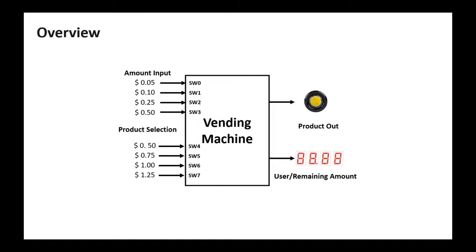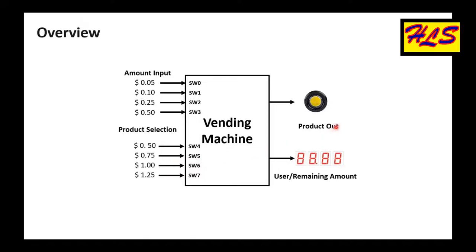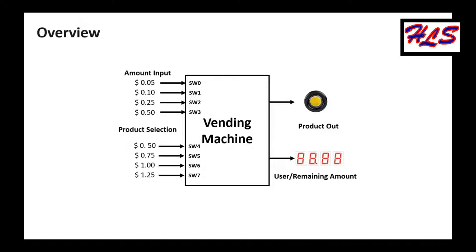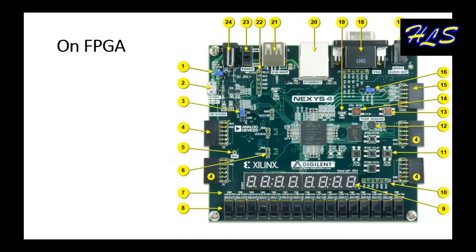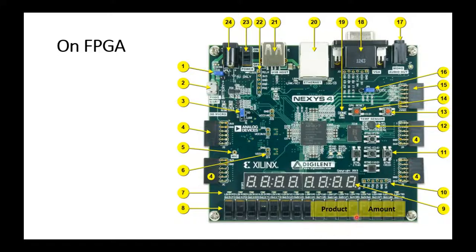This is the overview of the vending machine design. The money is input by the user from the rightmost 4 switches, and the product selection is made by the adjacent 4 switches. Once the product is selected and the user amount is greater than the cost of the product, the product is sent out and the remaining amount is calculated.